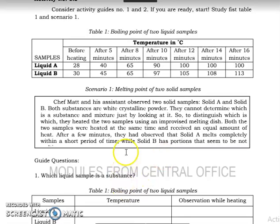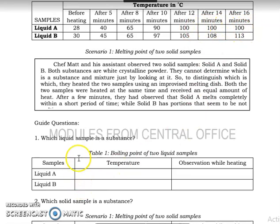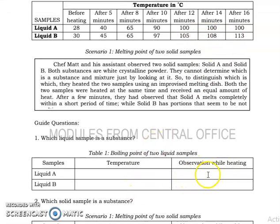Based on Table 1, which liquid sample is a substance? The answer is liquid A — as you can see, it has a fixed boiling point from 12 minutes until 16 minutes. The boiling point for liquid A is 100 degrees, and for liquid B it is 105 to 113 degrees. While heating, liquid A has a fixed boiling temperature and liquid B has a varying boiling temperature.